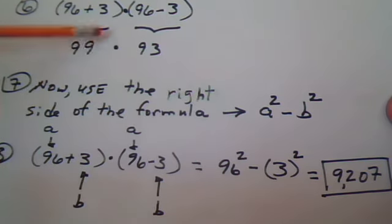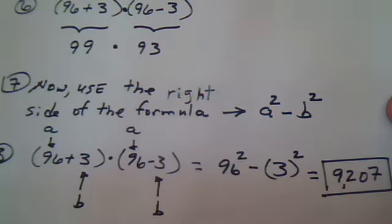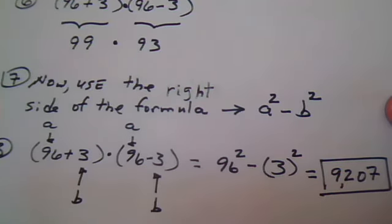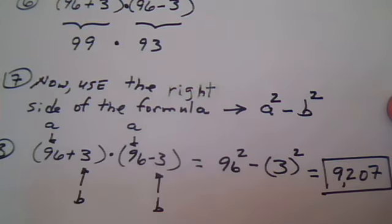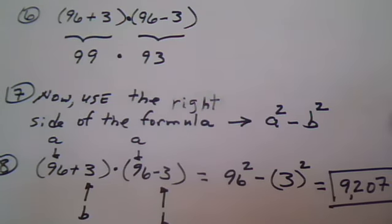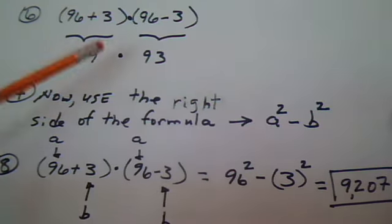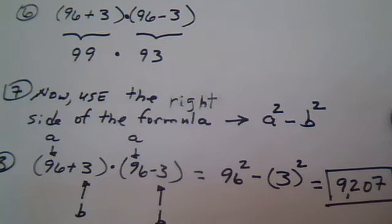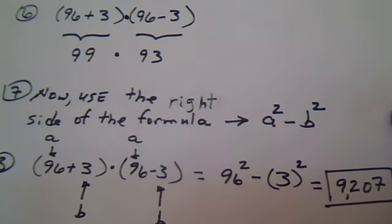You could check your answer by multiplying these two numbers, 99 times 93, and you'll see you get the same, 9,207. So this was practice using the formula. It was longer than just multiplying, but it gave us a chance to see how this formula is put together.